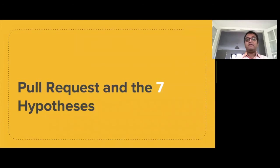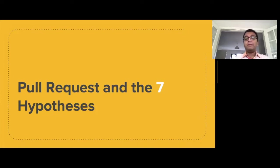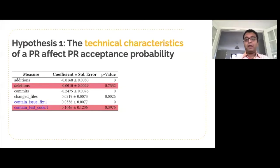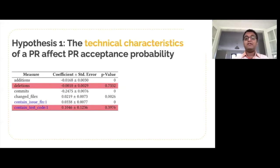Overall, we tested seven hypotheses in our study relating to different factors. The first four were from previous studies and the last three were introduced by us. We had 17 measures related to these seven hypotheses, 15 of which were ultimately found to be significant. The first hypothesis we looked at was the technical characteristics of a pull request, and we looked at the number of lines added and deleted, the number of comments and changed files, and if the pull request contained a fix for an issue and test code. The number of lines deleted and whether a pull request contains test code were found not to be very significant.